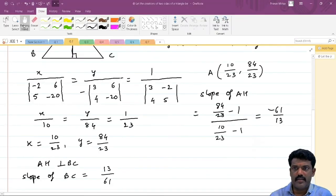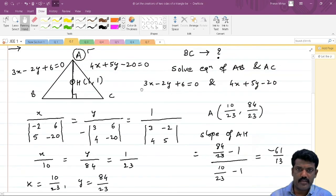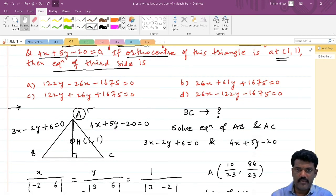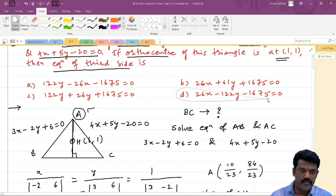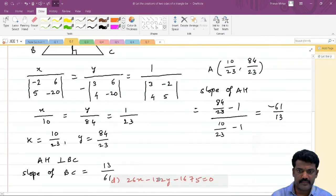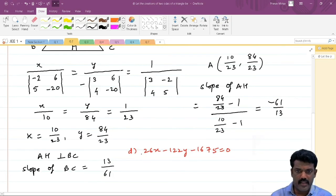So we check which option has 13/61 slope, that will be the equation of BC. So this is the line. Option D, we check its slope, 13/61 hai kya. So slope of this line is -26/-122 that is 13/61, so this last option is correct.